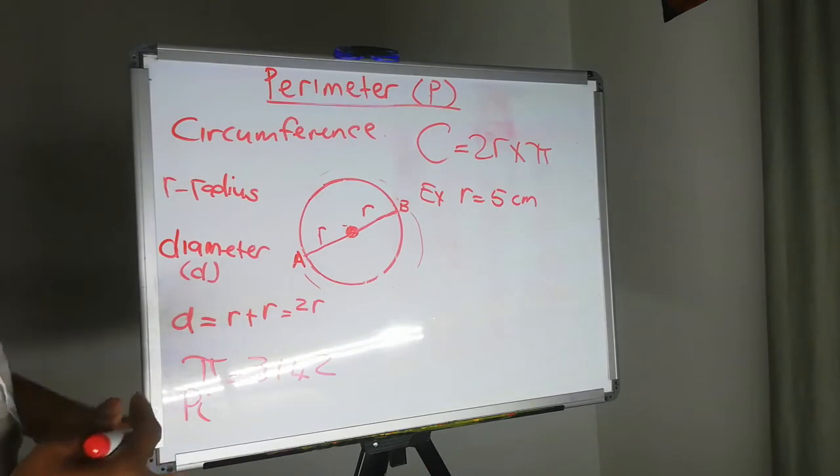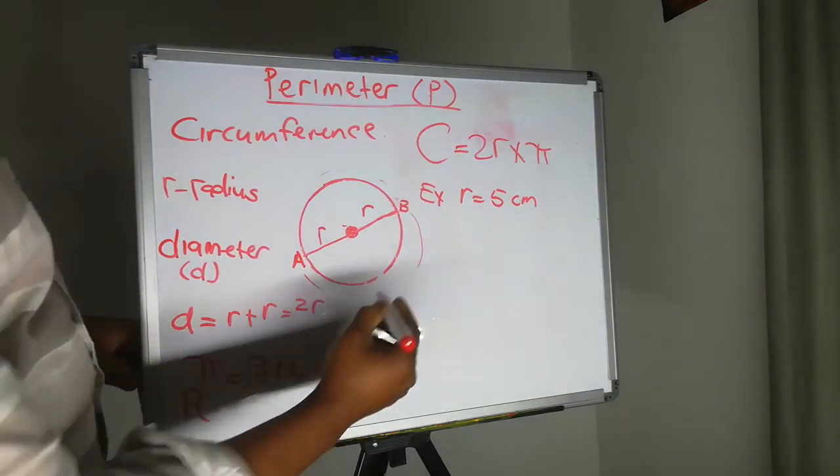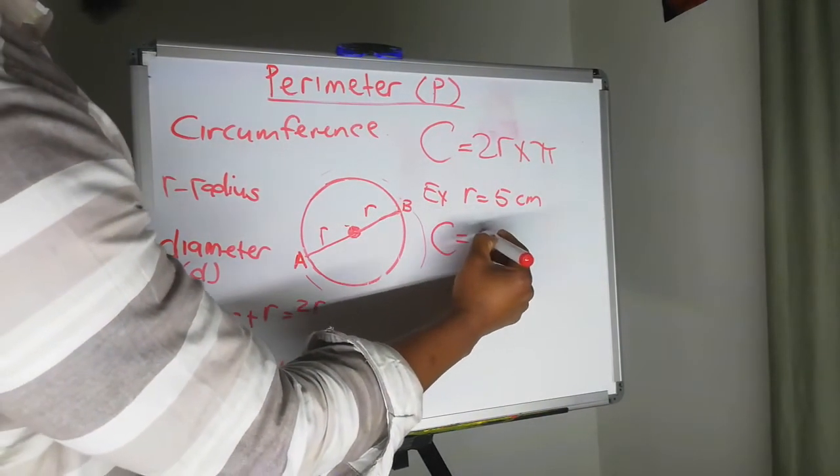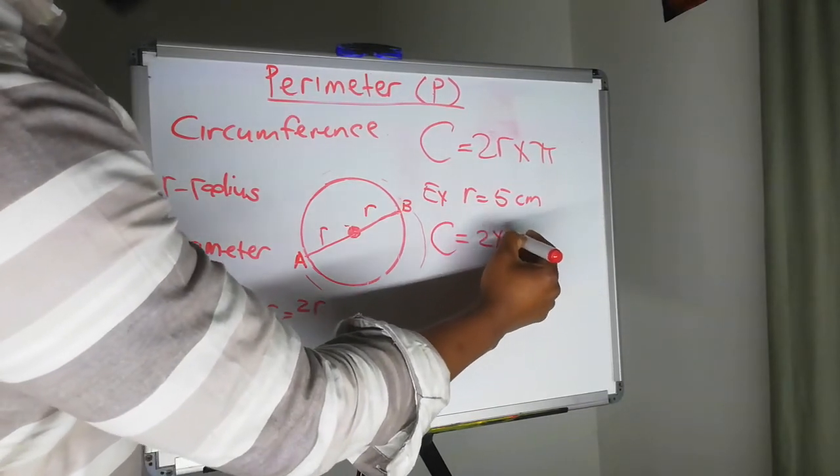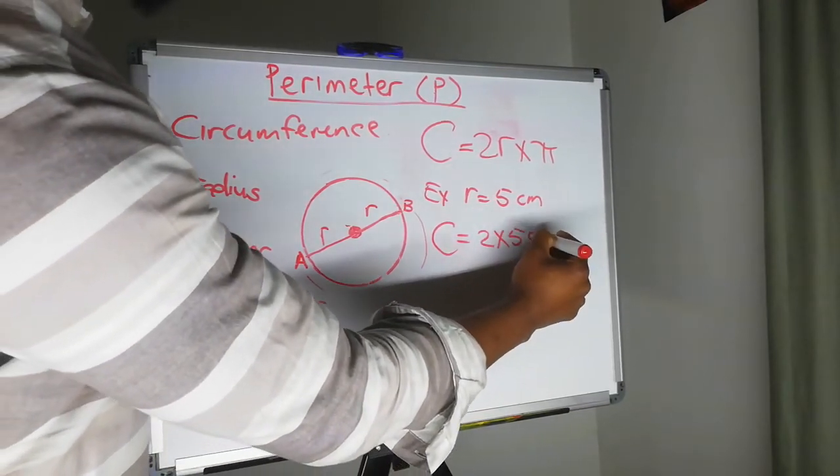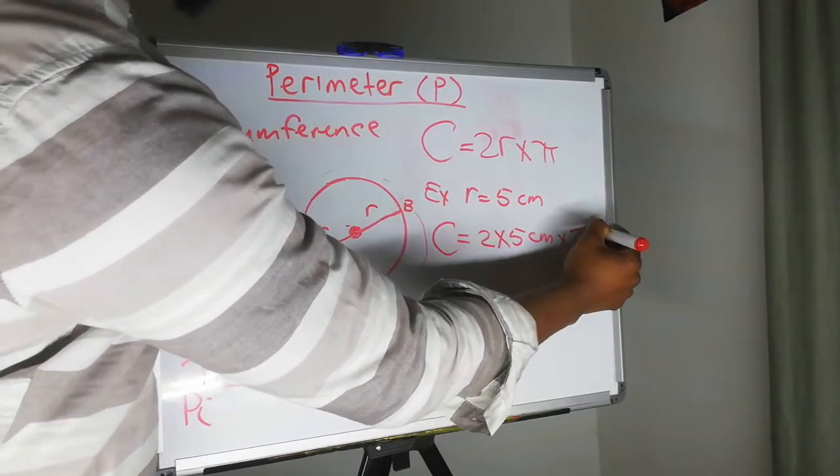Now we have to calculate the circumference. So C is equal to two times five centimeters times pi.